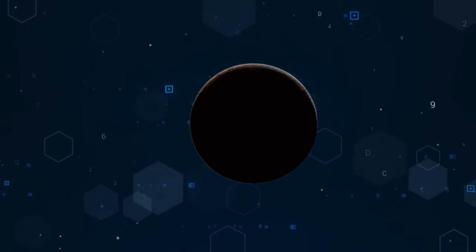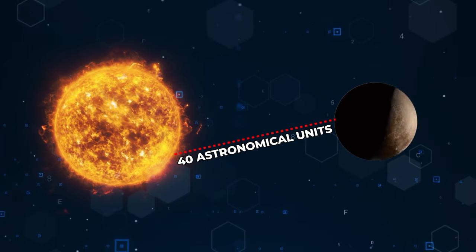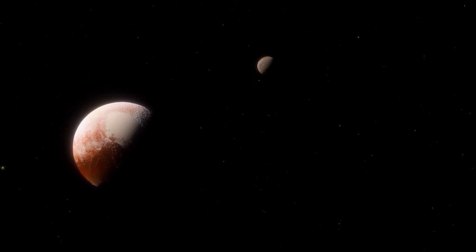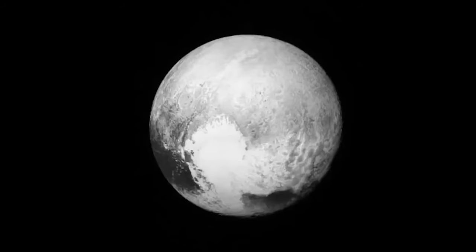Pluto resides at a staggering distance of approximately 40 astronomical units from the sun. It stands as a celestial enigma, a dim and unremarkable presence in the vast expanse of space.